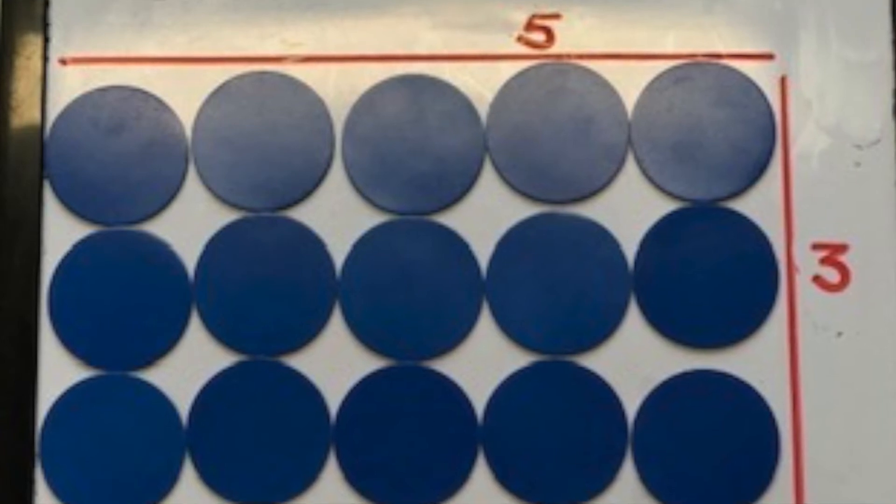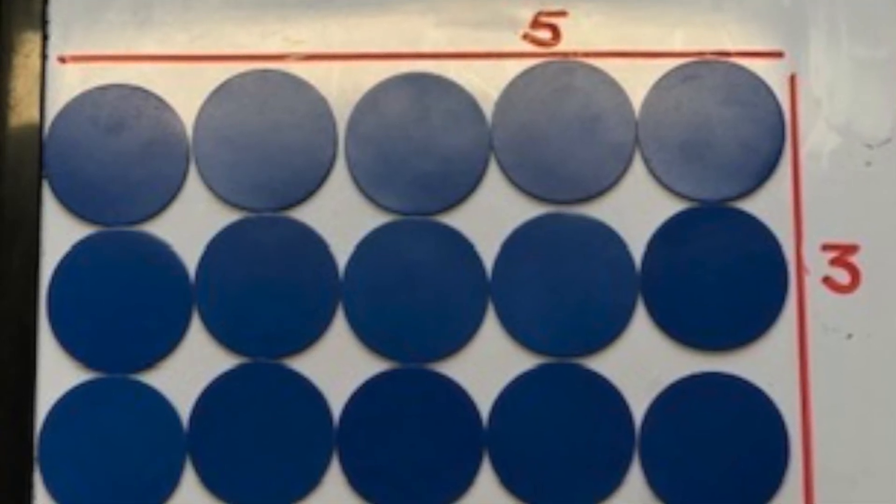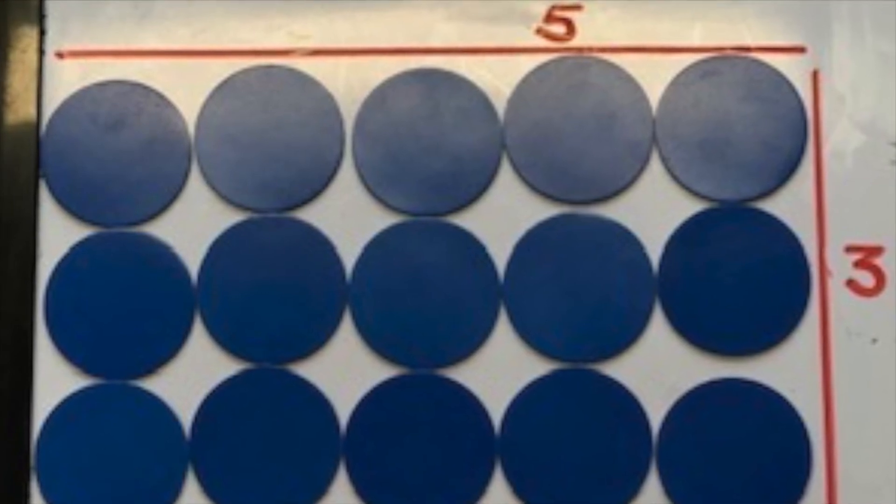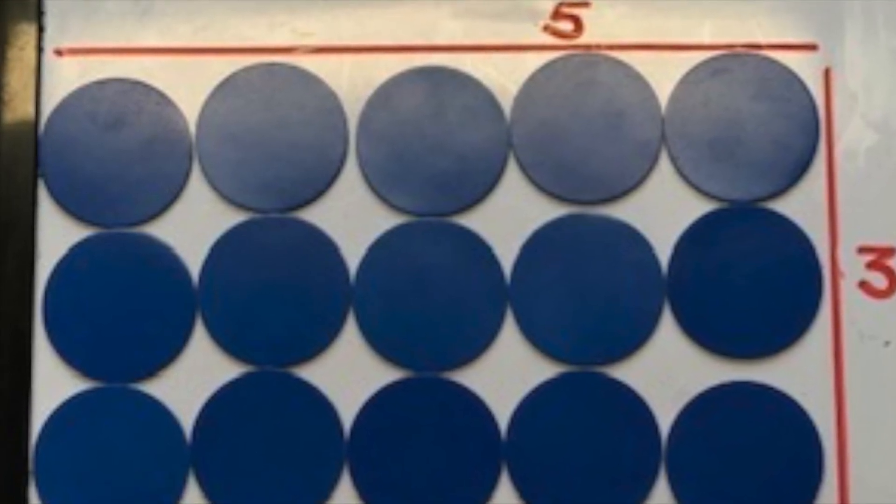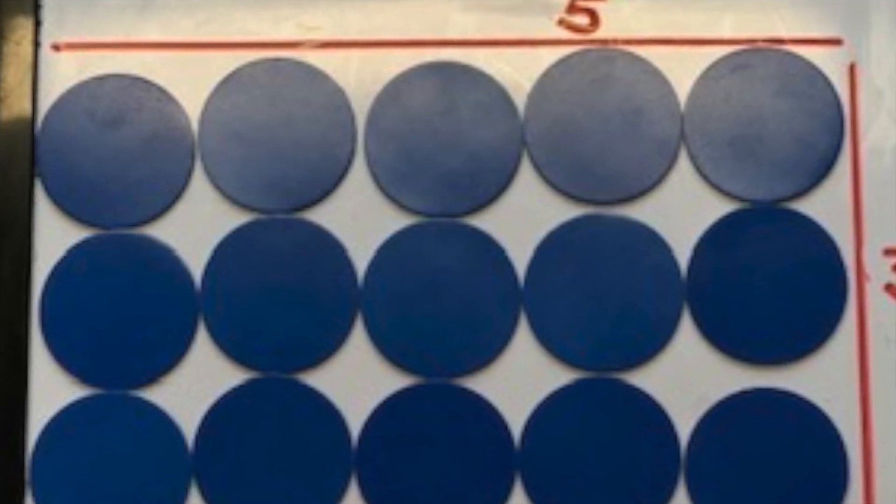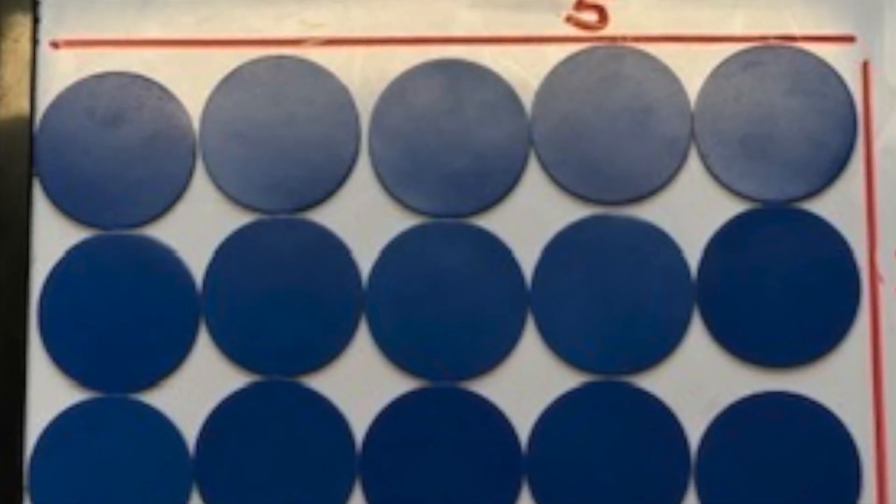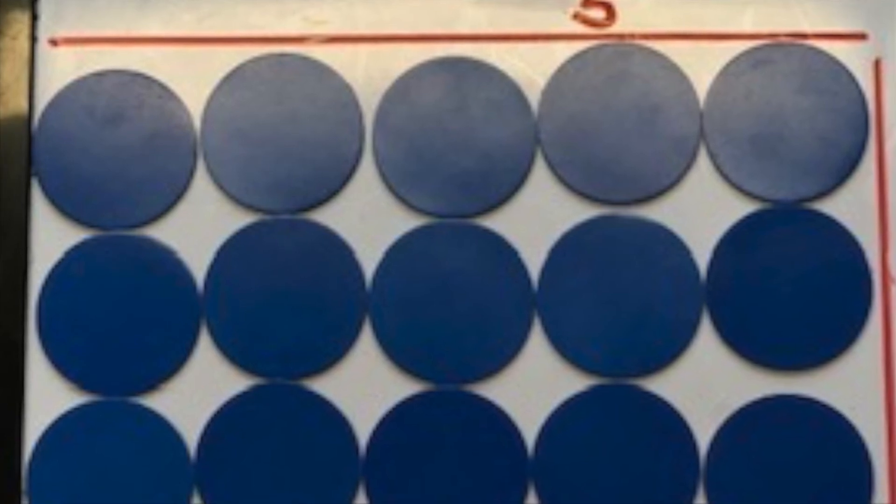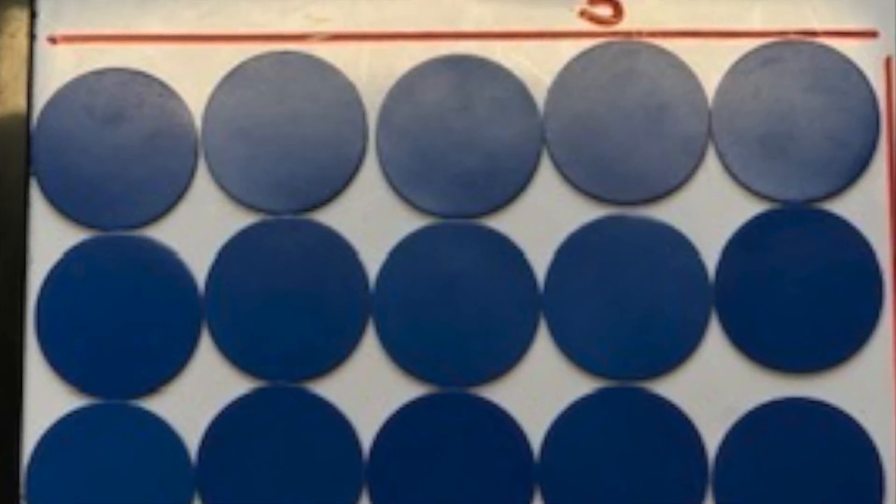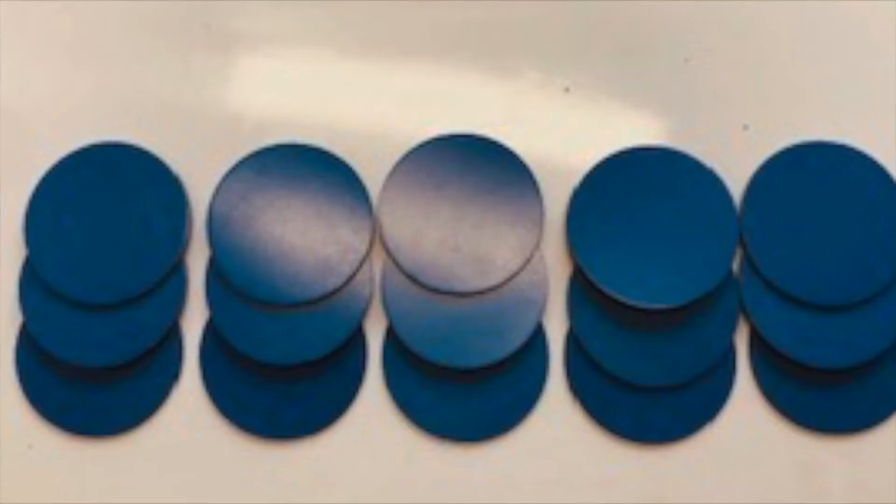I'm going to have rotated my array so now I've got 3 times 5. I've started with 3 counters, one, two, three, and how many times am I going to have 3 counters? Five times. One, two, three, four, five. Now I'm comfortable that they are the same. What else do I know about my multiplication facts?